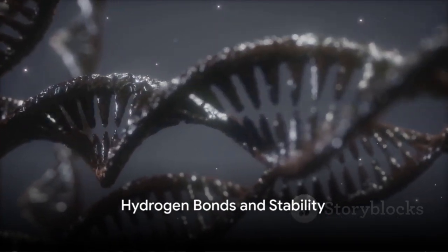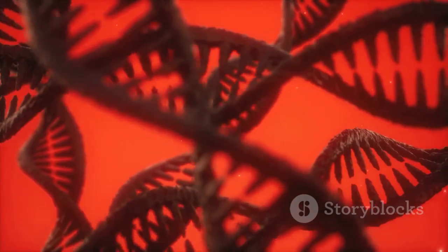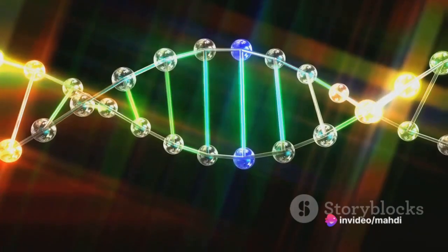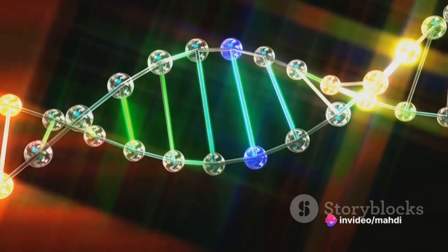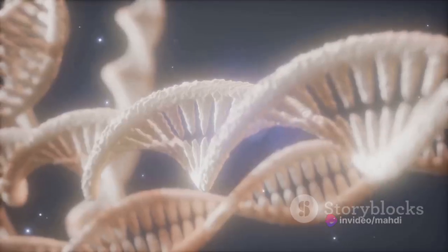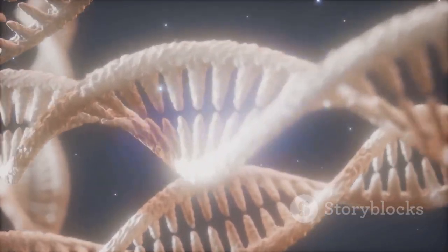So, how do these two strands stick together? It's through hydrogen bonds, the glue that holds the DNA double helix together. Two hydrogen bonds form between adenine and thymine, while three form between guanine and cytosine. This bonding gives DNA its stability, allowing it to hold the genetic code securely.